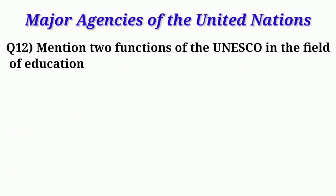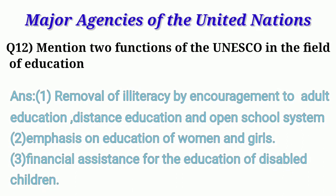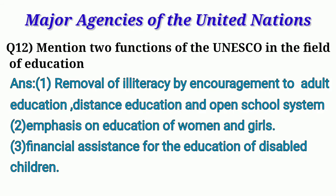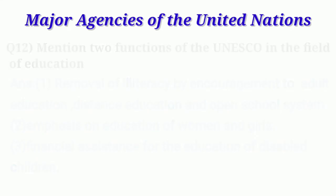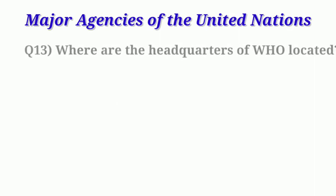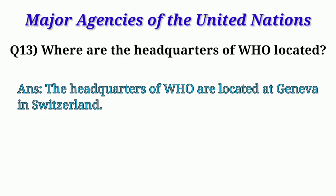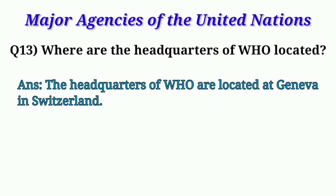Question 12: Mention two functions of UNESCO in the field of education. Instead of two we will do three. First, removal of illiteracy by encouragement to adult education, distance education, and open school system. Second, emphasis on education of women and girls. Third, financial assistance for education of disabled children. Question 13: Where are the headquarters of WHO located? Headquarters of WHO are located at Geneva, Switzerland.